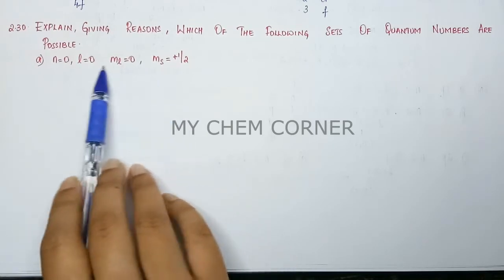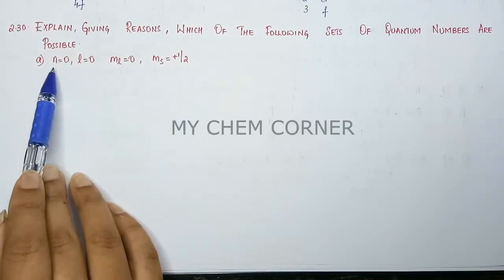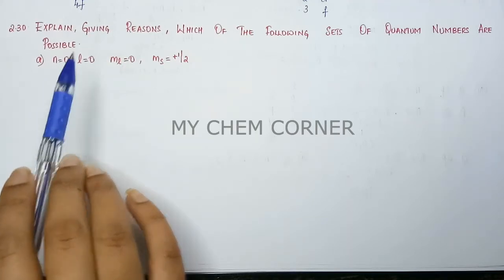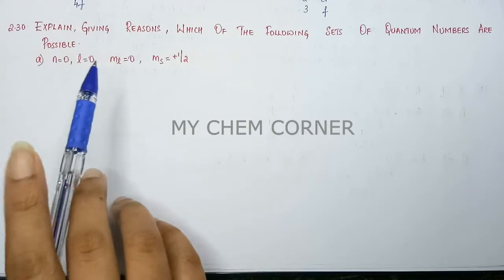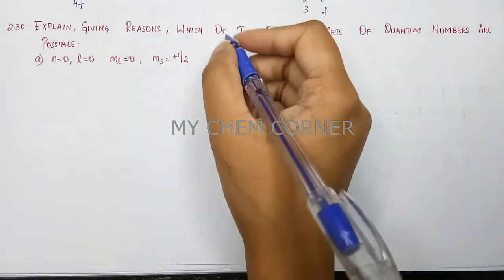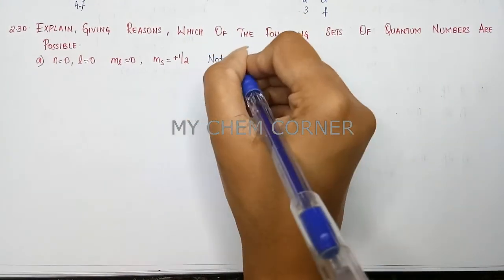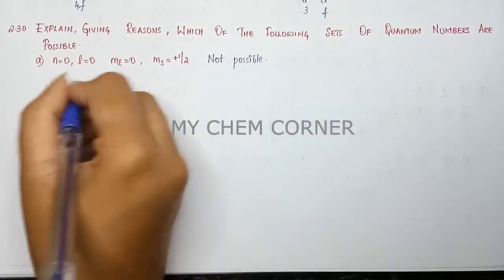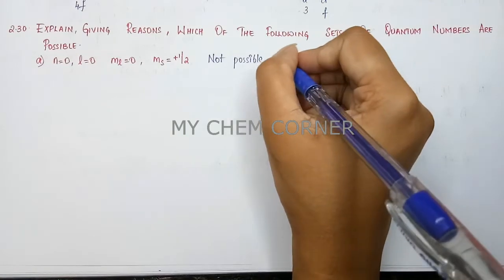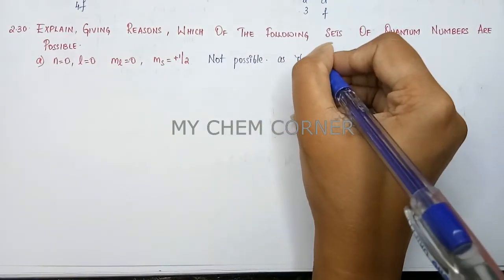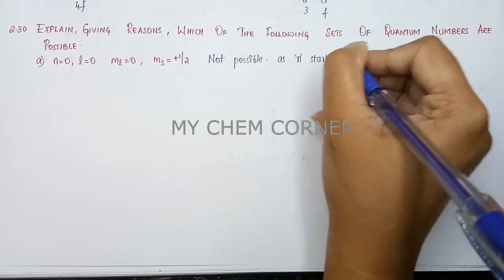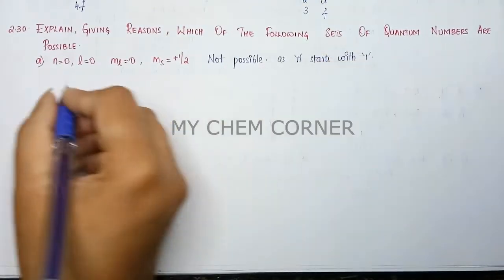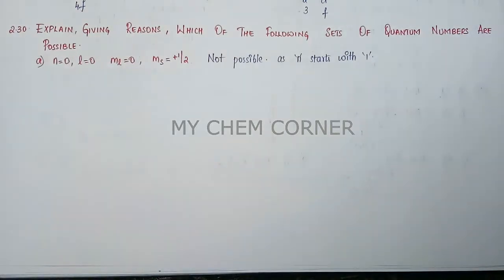Before we move to the other ones, we have to first see here — the principal quantum number can never be equal to zero. It always starts with one. So this particular set of quantum numbers is not possible, as n starts with one and not zero. So the first one is not possible.